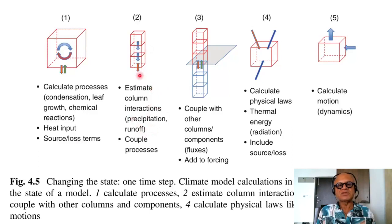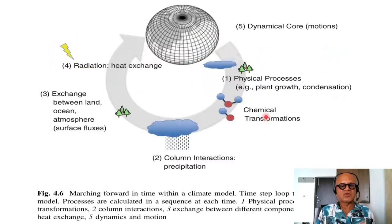Estimate column interactions like precipitation and runoff in the streams. Couple the processes: precipitation has to change runoff, runoff will affect soil moisture, soil moisture will affect plants, and so on. Couple other columns. One column is talking vertically, it has to also talk horizontally with other columns. These are done with fluxes between grid boxes at each interface, and it adds to the forcing. Calculate physical laws: thermal energy, radiation, include sources and loss, and calculate motion or dynamics using the momentum balance term.